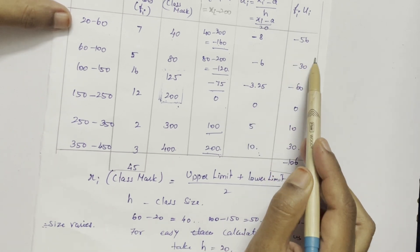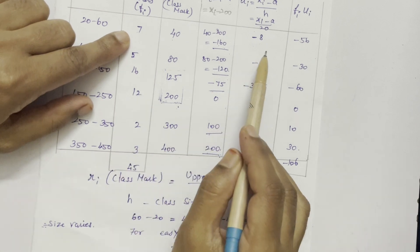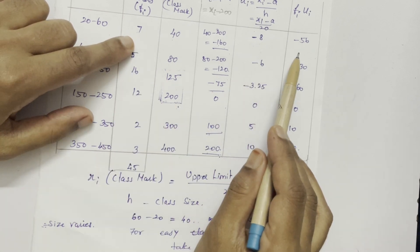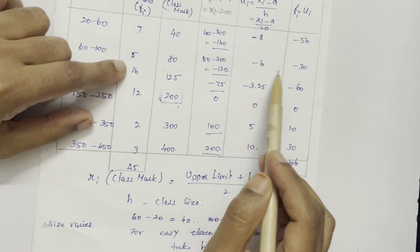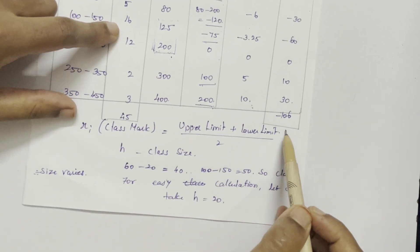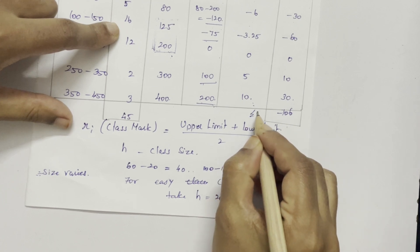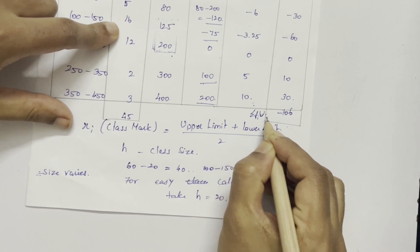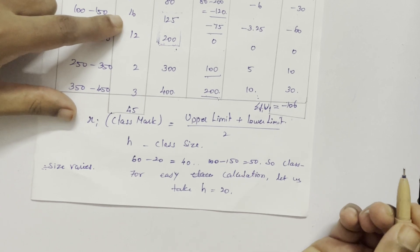Then FI UI. FI is here. UI is here. We have multiplied these numbers. Minus 8 into 7, minus 56. Minus 6 into 5, minus 30. And then we have multiplied all the numbers and added. This is sigma FI UI, minus 116.